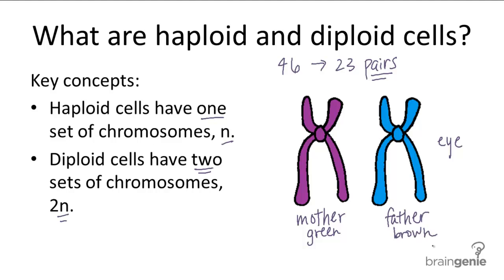So the diploid cell will have two of each of the 23 types of chromosomes — two type 1 chromosomes, two type 2 chromosomes, and so on. And each type codes for the same characteristic, but different specifications of that characteristic.